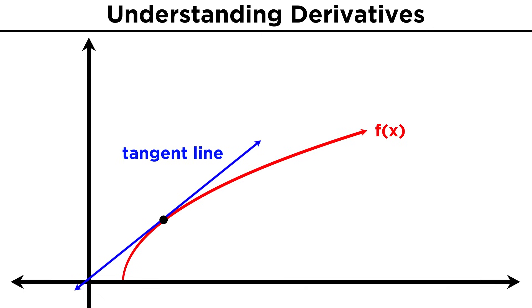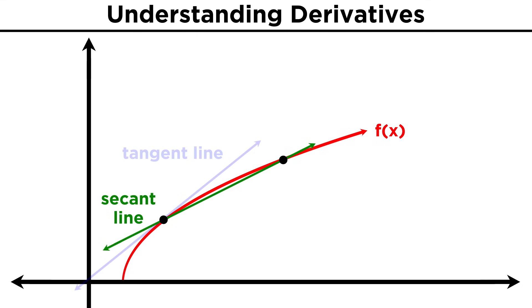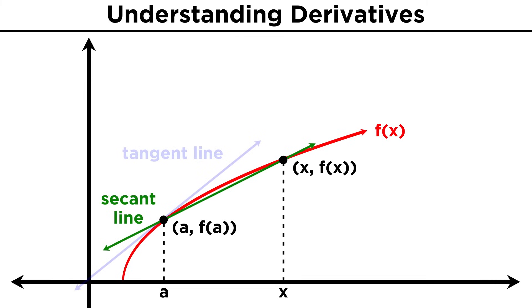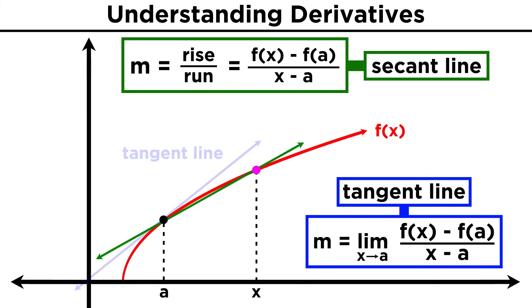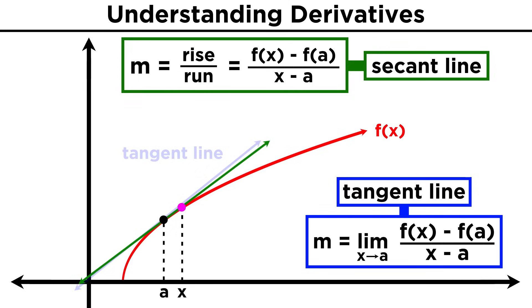Now looking at the tangent line again, let's formalize this a little bit more. Remember that our method involved choosing a second point on the curve. We can give the first point the coordinates a, f of a, and the second point can be x, f of x. The slope of this line, which we can call the secant line, is rise over run, so f of x minus f of a, over x minus a. Then we can allow point x to approach point a, and the slope of the tangent line will be the slope of this secant line in the limit of x approaching a.